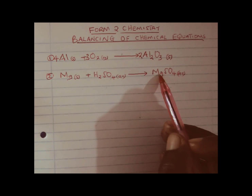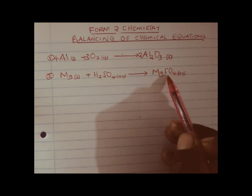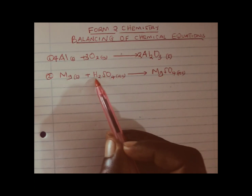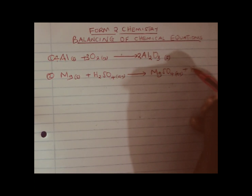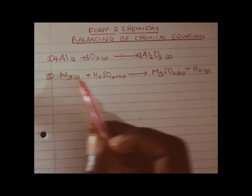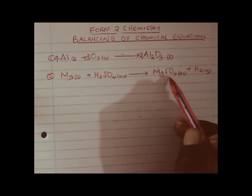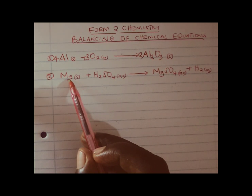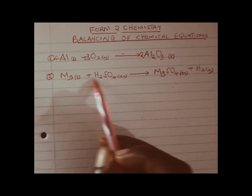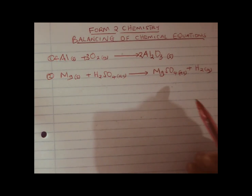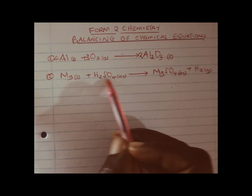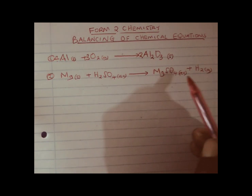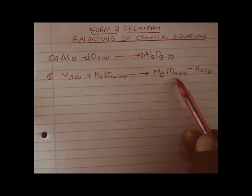The valency of magnesium is 2 and that of the sulfate ion is 2, and therefore that is the correct formula of magnesium sulfate. Magnesium, having taken the sulfate ion, will leave hydrogen gas. Remember, the reaction between metals and acids will always produce a salt and hydrogen gas. We can now balance this equation. We have 1 magnesium on the reactant side and 1 on the product side. We have 2 hydrogens on the reactant side and 2 on the product side, so the equation is automatically balanced.